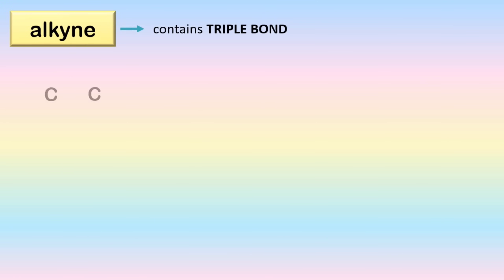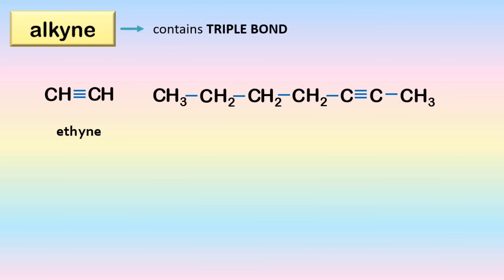Now let's proceed to alkynes, which contain a triple bond. For example, two carbon atoms with a triple bond — both carbons will only need one hydrogen each to become stable since they already share three electrons with each other. To name this hydrocarbon, find the location of the triple bond, then number the carbons starting near the triple bond. For the given example: carbons one through seven, the triple bond is at carbon two, so the name is 2-heptyne.